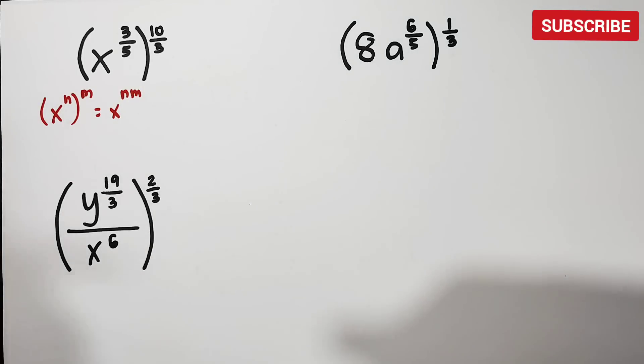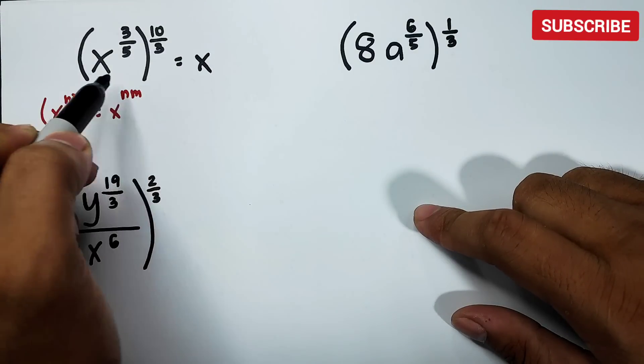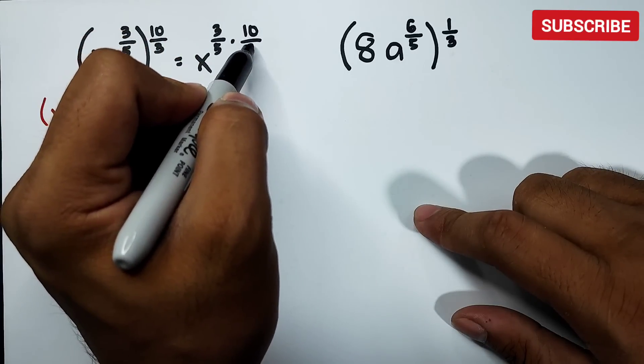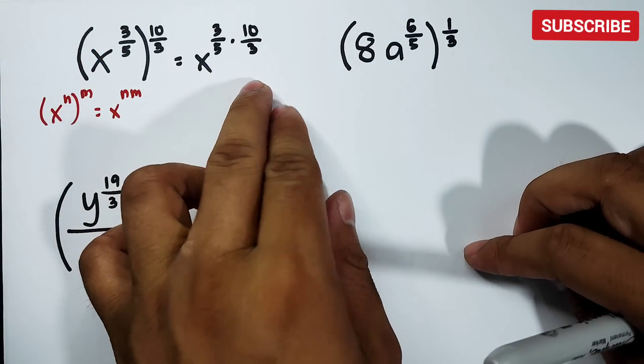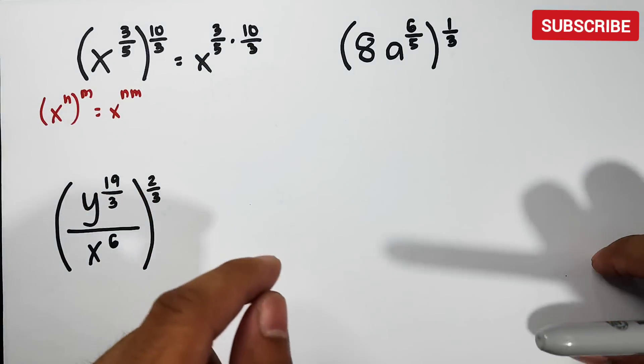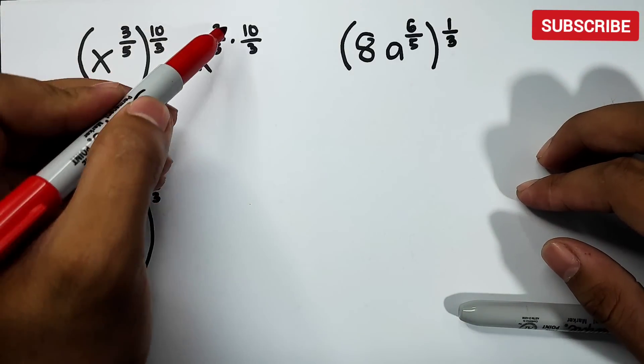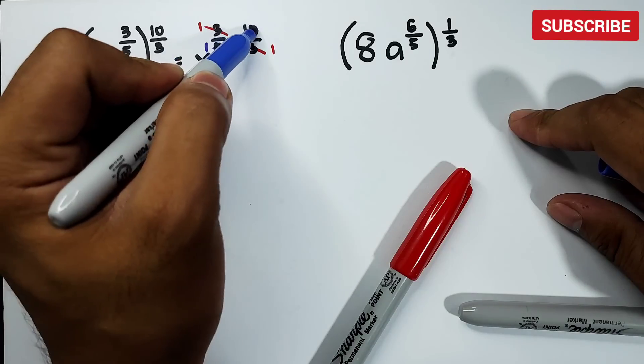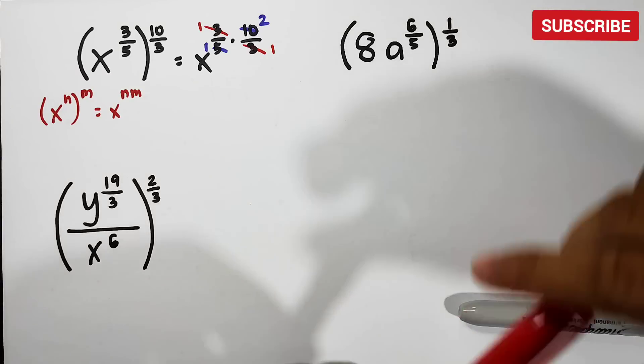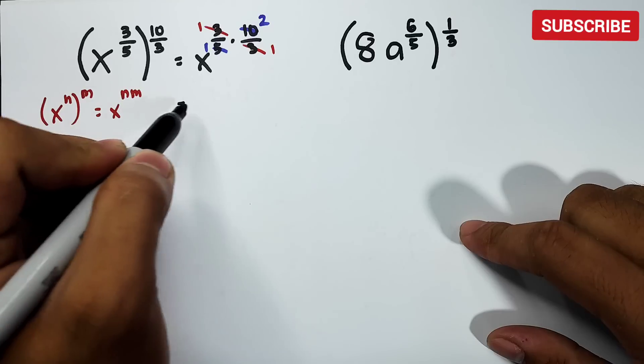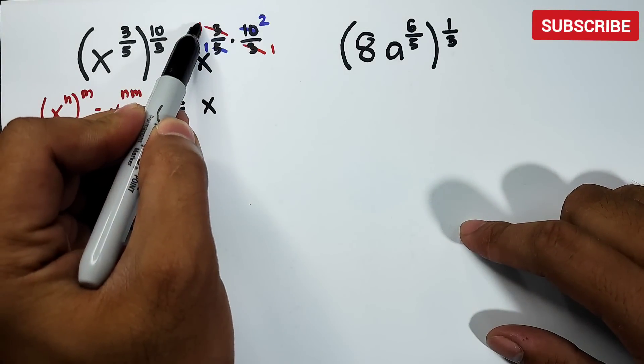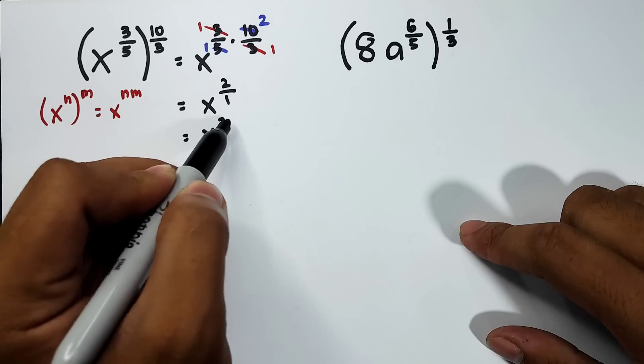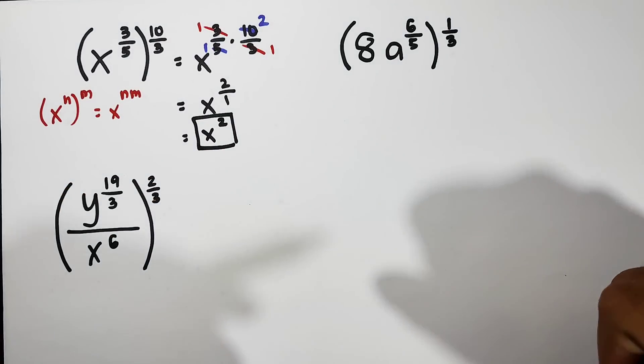So what we need to do here is this: let's simplify this. Copy your base x, and then you have 3 over 5 times 10 over 3. So you can multiply that already. This is multiplication, not addition: 3 times 10 then 5 times 3. But of course we won't make it hard for ourselves. We can use cancellation method wherein we can cancel out 3 and 3, it will become 1 and 1. For 5 and 10, it can become 1 and this is 2. So what will happen here in our solution is that you need to copy the variable x, then 1 times 2 is 2 over 1 times 1 which is 1, and you can still simplify this guys.